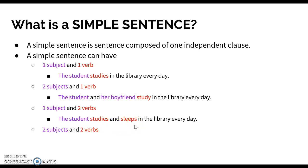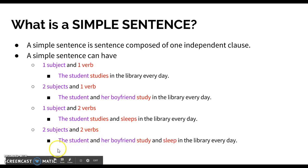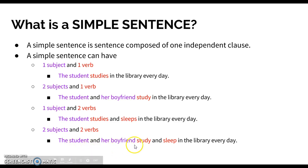The final combination for a simple sentence is two subjects and two verbs. For example: 'The student and her boyfriend study and sleep in the library every day.' We have two subjects — the student and her boyfriend — and two verbs: study and sleep.